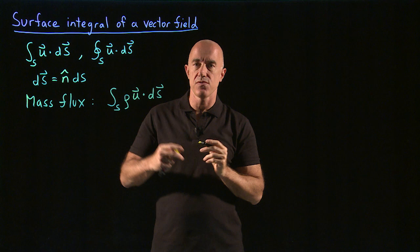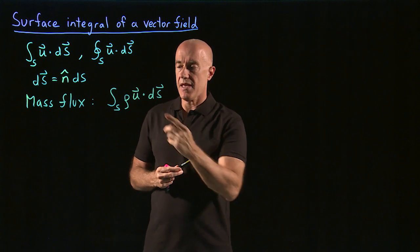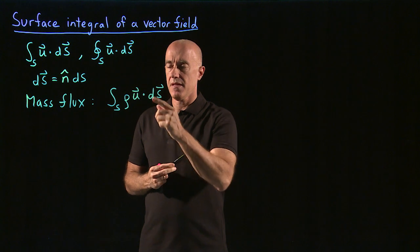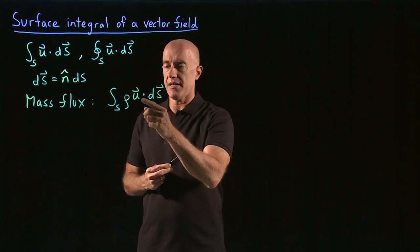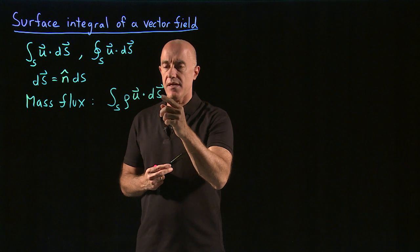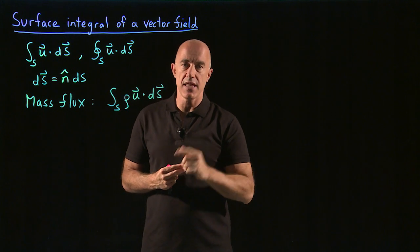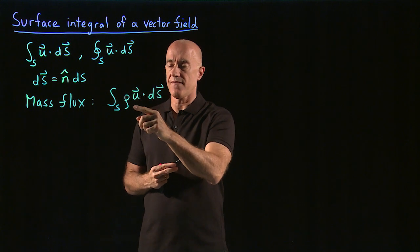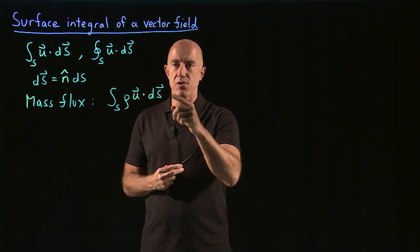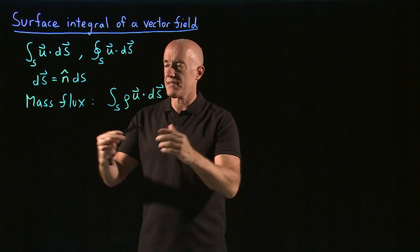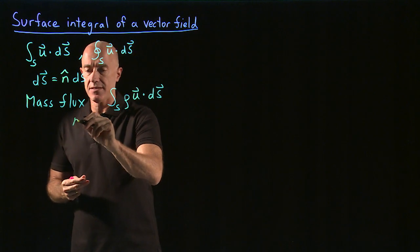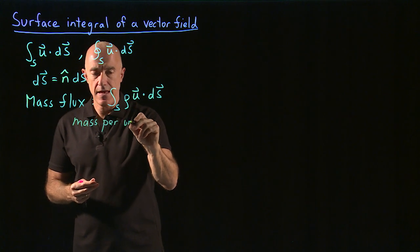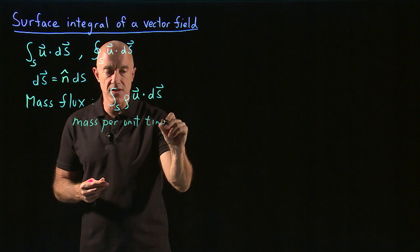So that's the mass flux through the surface. If the density is the mass per unit volume, the velocity is the length per unit time, and the surface is length squared, which is an area, then this is a mass per unit volume times a volume per unit time.